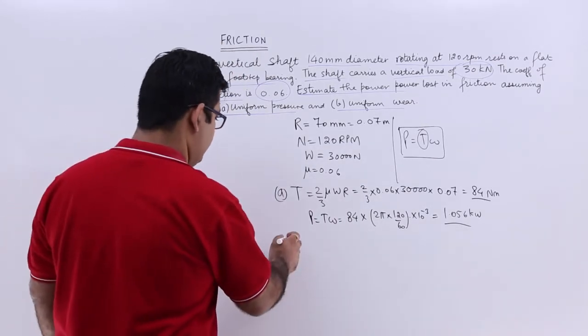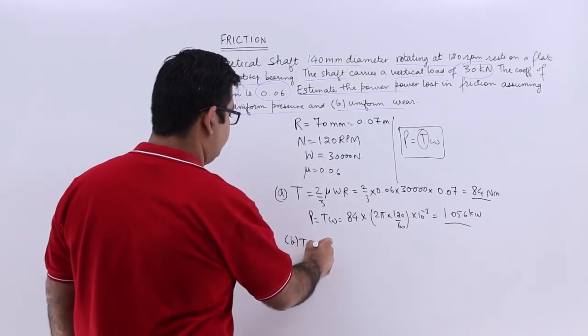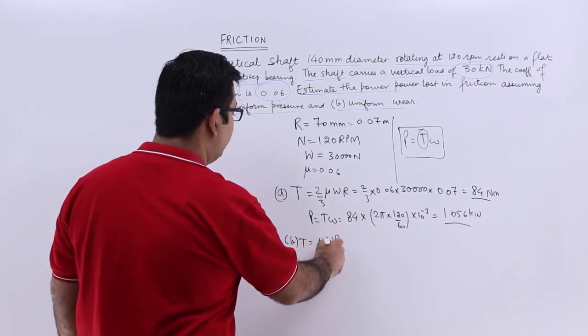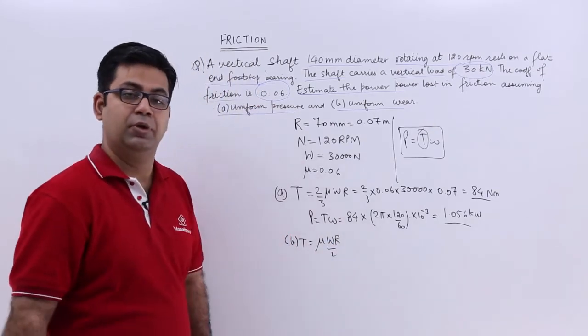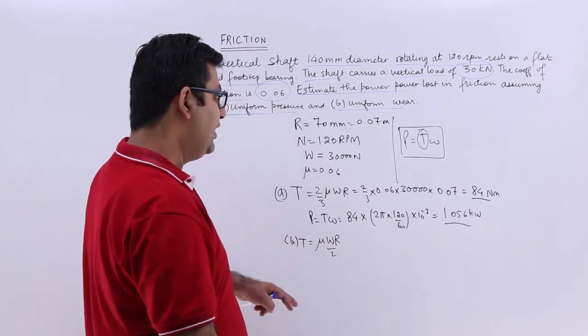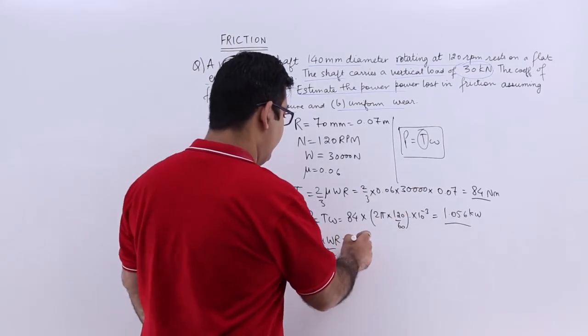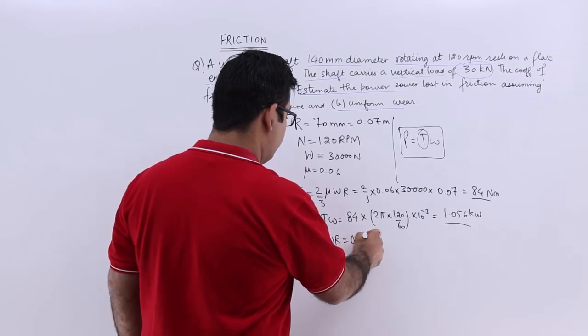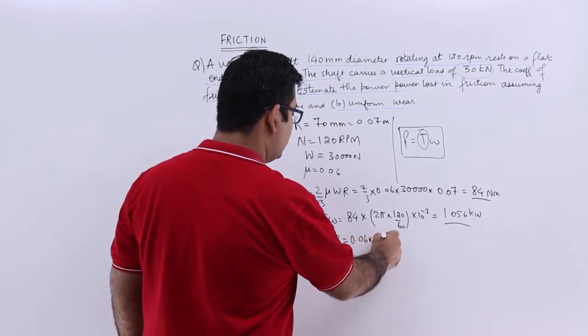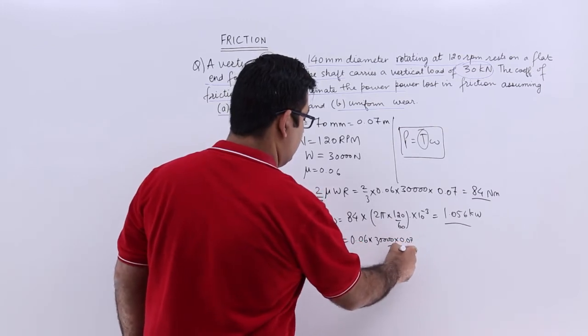For uniform wear torque becomes mu wr by 2. So this is 84 and this would be how much then? You will have 0.06 into 30,000 into 0.07 by 2.